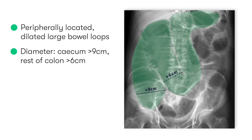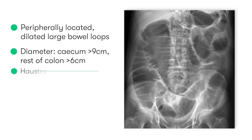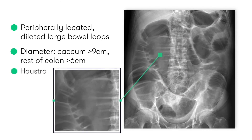We can tell that these dilated loops are large bowel rather than small bowel due to the presence of haustrae. Haustrae are saccular folds of mucosa within the large bowel which give it its characteristic segmented or pouch-like appearance, and you can see the haustrae highlighted here.